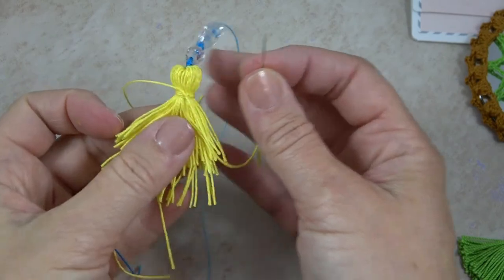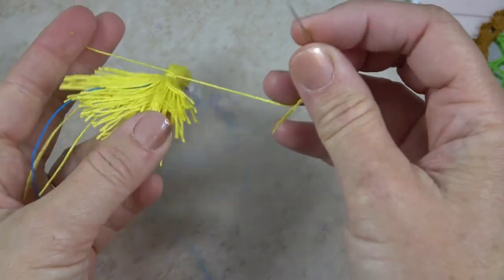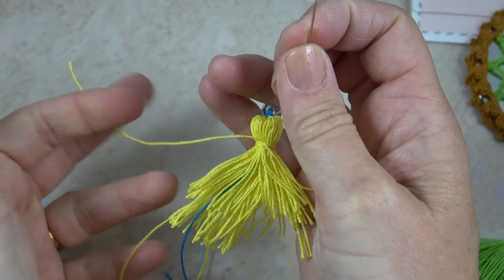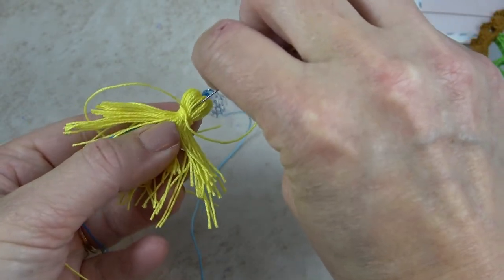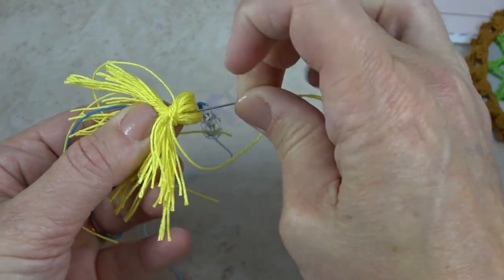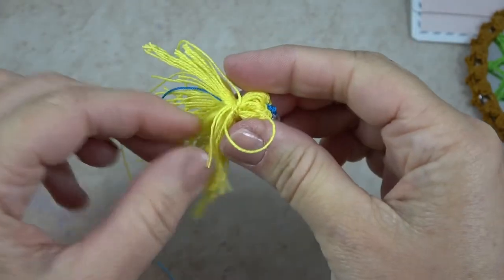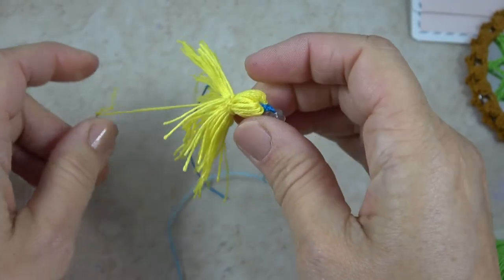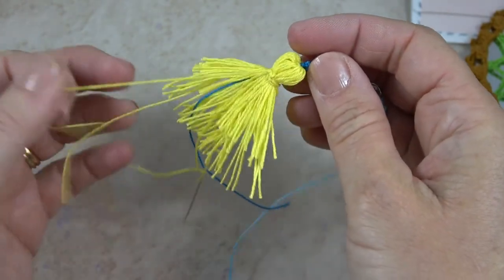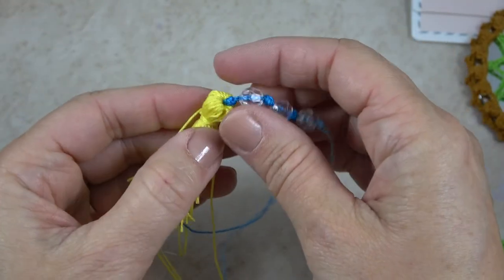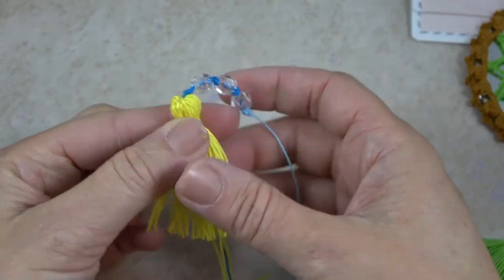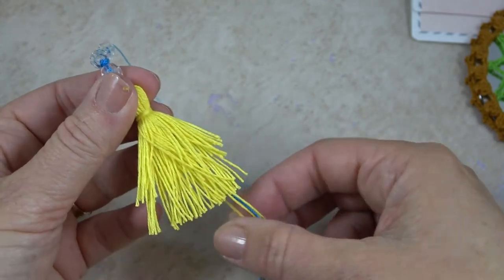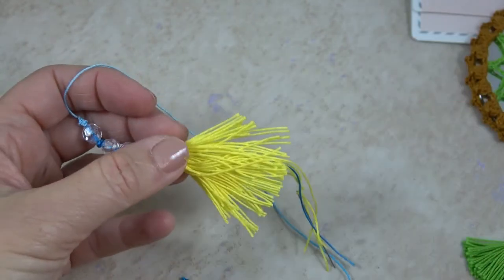I found it looked best if you hide these tying threads inside the tassel. So I threaded it on my needle and I'll go down through the head of the tassel like so. Pull it through and I'll do the same thing with the other one. And then you can't see them but that knot is still there nice and secure. And then the last thing is you just want to trim your tassel so it's the length you like.